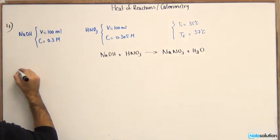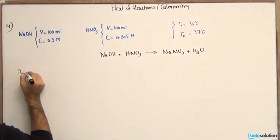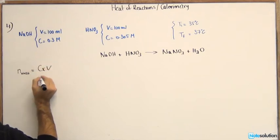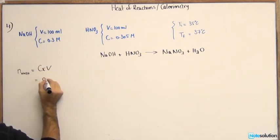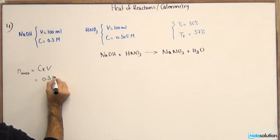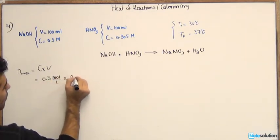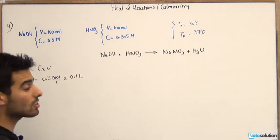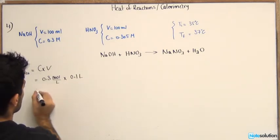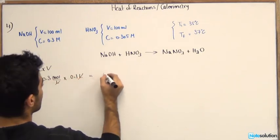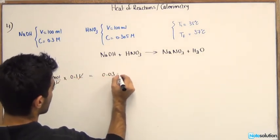So let's go ahead and do the number of moles. For NaOH, number of moles equals C times V equals 0.3 mole per liter times 0.1 liters. Remember that you need to switch up the units as well. So that would give you 0.03 moles.